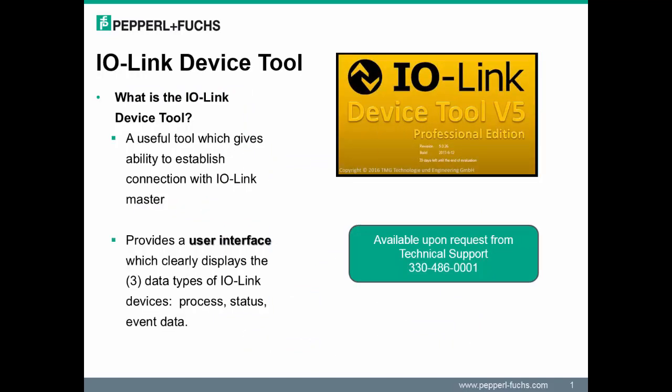Now let's introduce the IO-Link device tool and its key benefits. The IO-Link device tool gives you the ability to establish a connection with an IO-Link Master to multiple IO-Link devices. More importantly, it provides a user interface that clearly displays the three different types of IO-Link data: process, status, and event data. To get this tool, please contact the Pepperl+Fuchs technical support team.